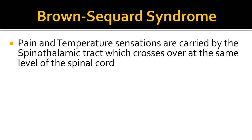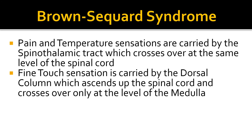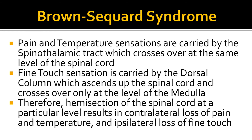Pain and temperature sensations are carried by the spinothalamic tract, which crosses over at the same level of the spinal cord, while fine touch sensation is carried by the dorsal column, which ascends on the same side and crosses over only at the level of the medulla. Hemisection of the spinal cord results in contralateral loss of pain and temperature and ipsilateral loss of fine touch in areas below the lesion.